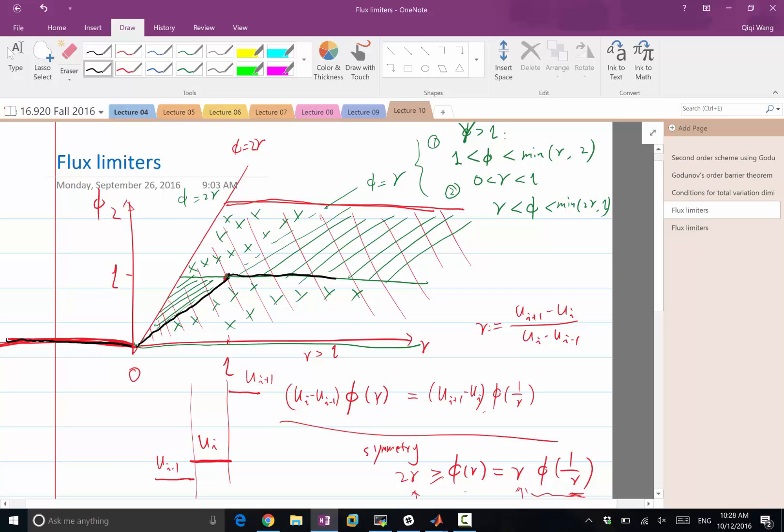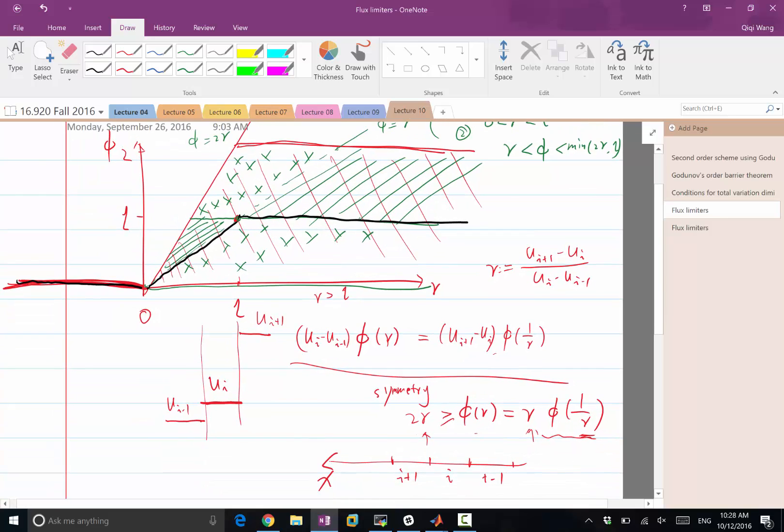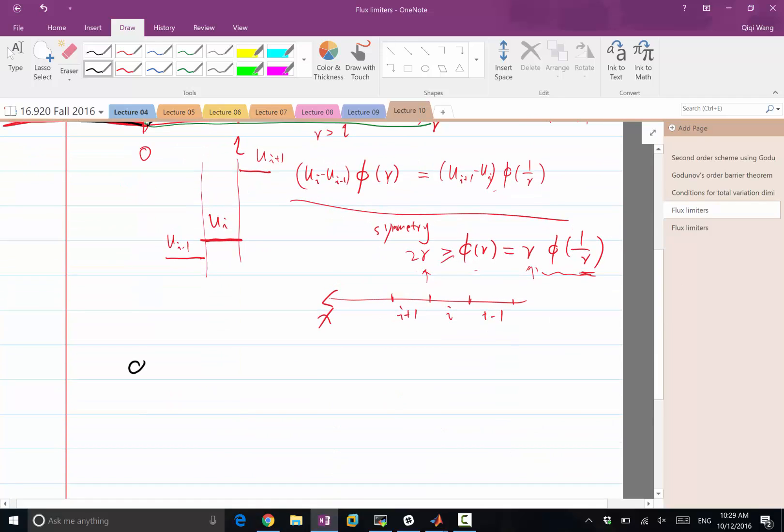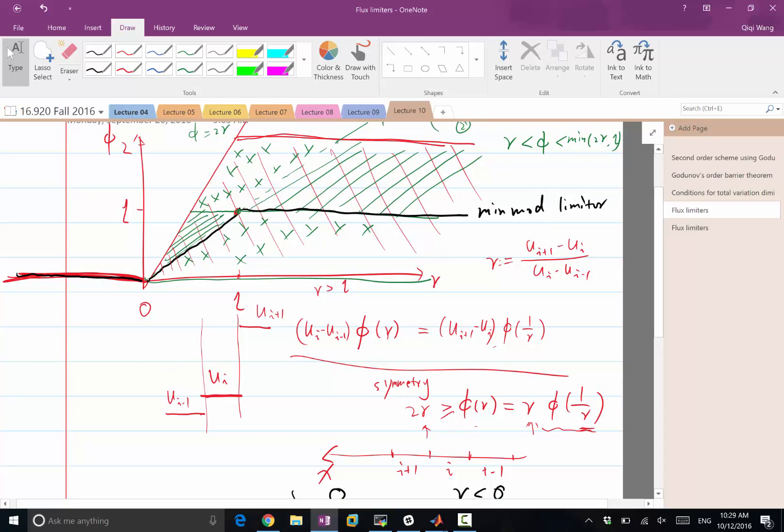Well, in this region, I can stay at φ equal to 1 always, right? So this is called the min-mod limiter. So min-mod of r has three pieces. It can be 0, it can be r, it can be 1. It's 0 when r is less than 0, and it's r when r is less or equal to 1, greater or equal to 0, and it's 1 if r is greater or equal to 1. So that's the first type of limiter that is going to give us second-order accuracy and monotonic.